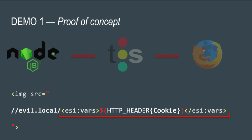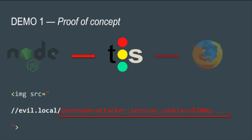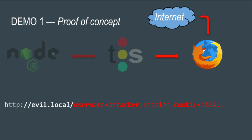Let's build a proof of concept for HTTP-only session hijacking without JavaScript. I built an image source tag pointing to evil.local — an attacker-controlled server. The file name requested by the victim's browser is an ESI tag pointing to their own header cookie. When this goes through the traffic server, it expands the value with the session cookie, the browser requests that URL, and I capture it in my HTTP logs.